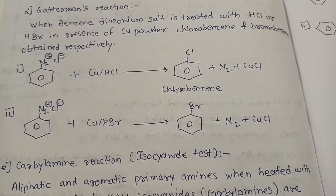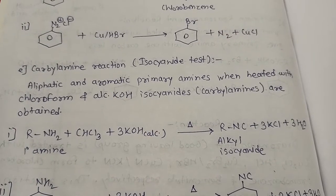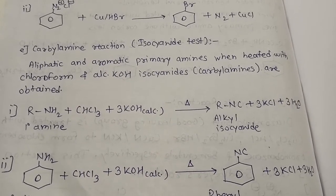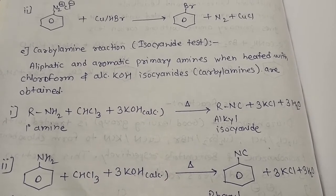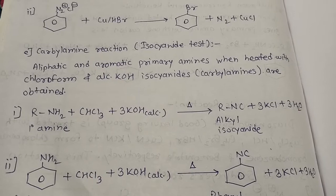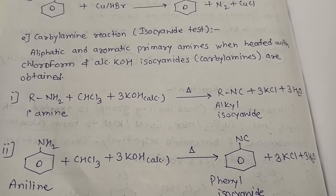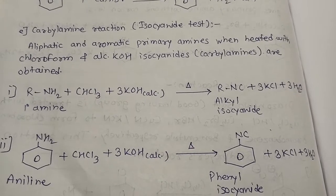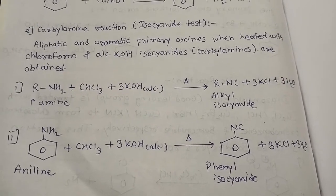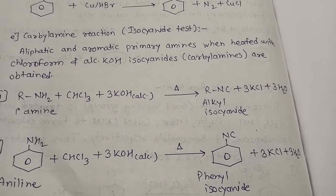The next reaction is carbylamine reaction, also known as the isocyanide test. Note: cyanide is CN⁻, isocyanide is NC⁻. Aliphatic and aromatic primary amines, when heated with chloroform (CHCl₃) and alcoholic KOH, give isocyanides (also known as carbylamines). Byproducts are KCl and water. For example, aniline plus CHCl₃ plus KOH gives phenyl isocyanide, along with KCl and water.